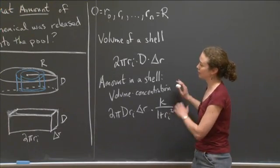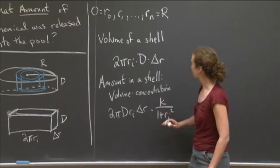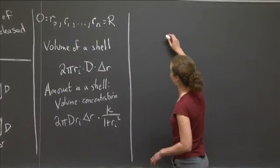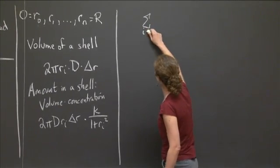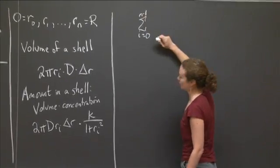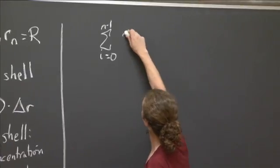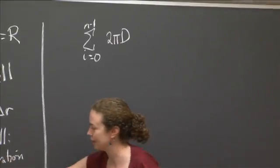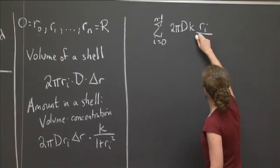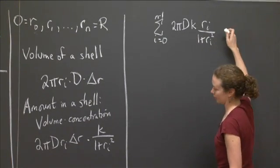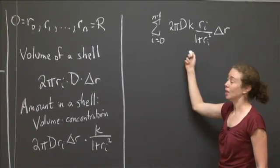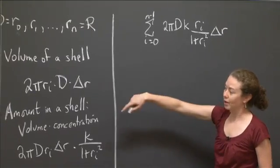And now what do I do to estimate the amount in the entire pool? Well, I add all of these up. So let me come over here and write down what the sum will look like. So I'm going to be summing from i equals, I said I was taking the interior radius, I think. I equals 0 to n minus 1 of this quantity, 2 pi d k. And then r sub i over 1 plus r sub i squared delta r. So this is our approximation of the amount of chemical in the pool.